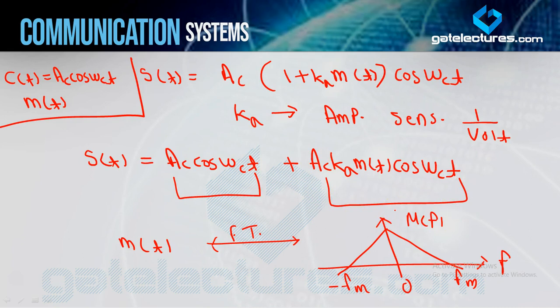As I told in the last video, if a signal m(t) is multiplied by cos — here AC and kA are just amplitude — the Fourier transform of m(t) cos(ωC t) gives M(F) shifted to both left and right. The formula is: [M(F − FC) + M(F + FC)] / 2. So M(F) will be right-shifted once and left-shifted once.